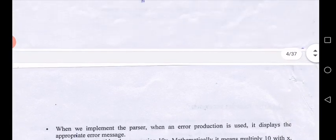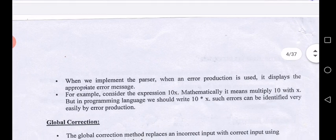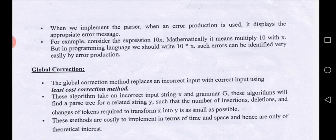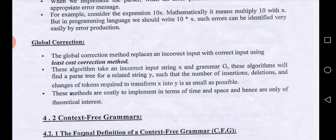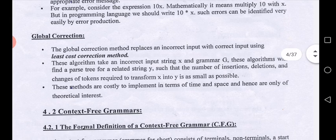Error production is a concept used to identify what kind of error it is. When an error production is used, it displays the appropriate error message. For example, consider the expression '10x' — mathematically it means multiply 10 with x, but in a programming language it should be written as '10 * x'. Such errors can be identified easily by error production.